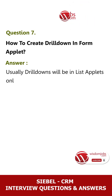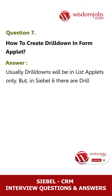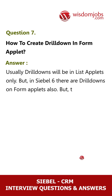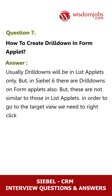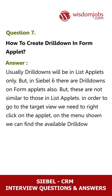Question 7: How to create a drill down in a form applet? Answer: Usually drill downs are in list applets only, but in Siebel 6 there are drill downs on form applets also, though these are not similar to those in list applets. In order to go to the target view, we need to right-click on the applet. On the menu shown, we can find the available drill downs with the title 'Go to XYZ View'.